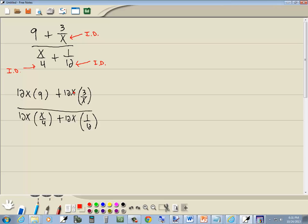Now these x's are going to cancel here. Now here we've got 4 and 12, both divisible by 4. 4 divided by 4 is 1. 12 divided by 4 is 3. Here we've got 12 and 12, both divisible by 12. 12 divided by 12 is 1. 12 divided by 12 is 1.